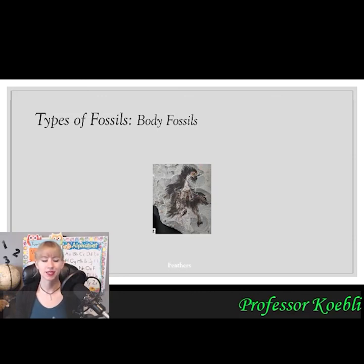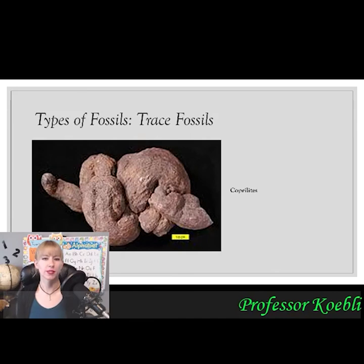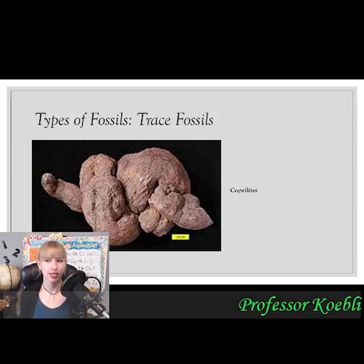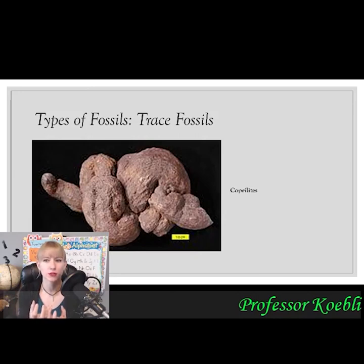Feathers are another important body fossil. Then we have trace fossils — things left behind like footprints, poop, or gnaw marks. A coprolite is fossilized poop. In some caves, scientists have found mammoth coprolites so well preserved that when broken open, they still smell fresh despite being thousands of years old.